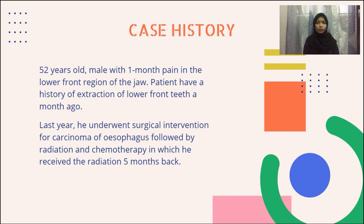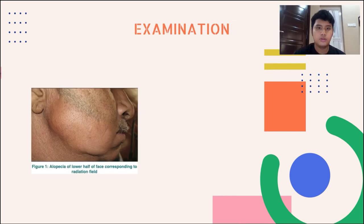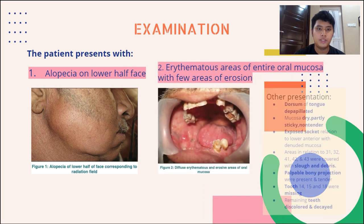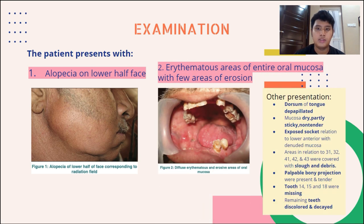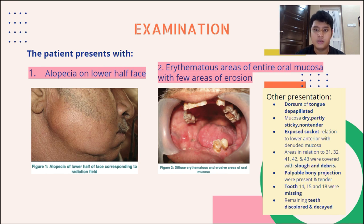His family history was non-contributory, but the patient appeared to be in overall good physical health with vital signs within normal range. On examination, the patient presented with xerostomia on the lower half of the face and erythematous areas of the entire oral mucosa with few areas of erosion. Other findings included a depapillated dorsum of the tongue, mucosa that was dry but slightly sticky and non-tender, exposed socket in relation to the lower anterior with denuded mucosa, and areas in relation to teeth 31, 32, 41, 42, and 43 covered with slough and debris. Palpable bony projections were present and tender, teeth 14, 15, and 18 were missing, and the remaining teeth were discolored and decayed.